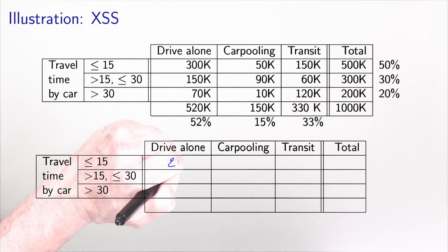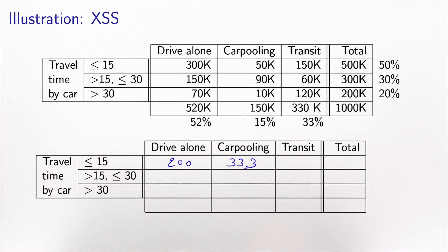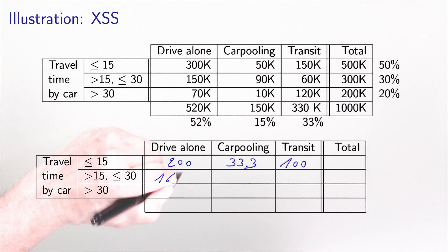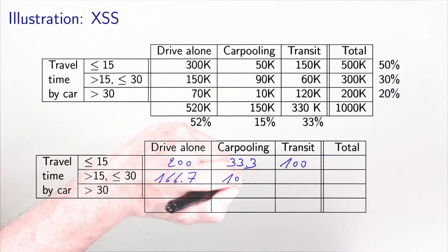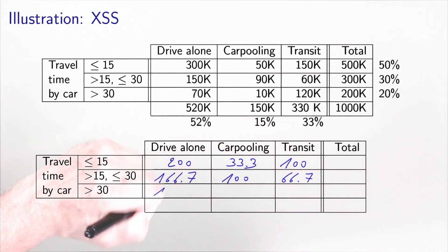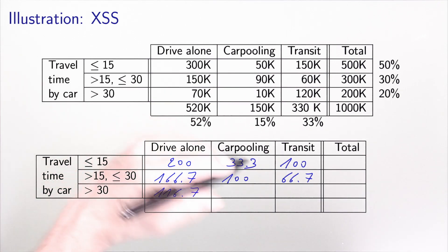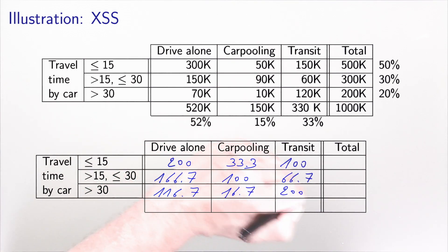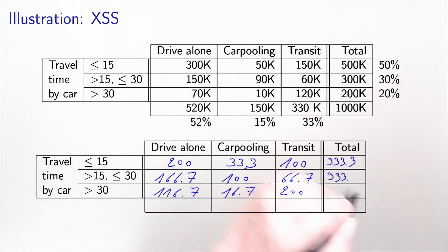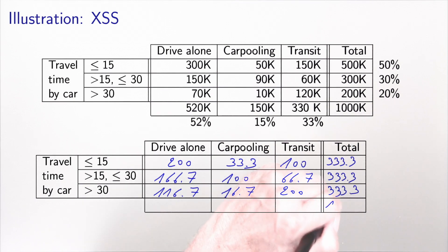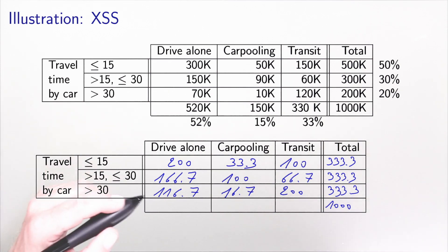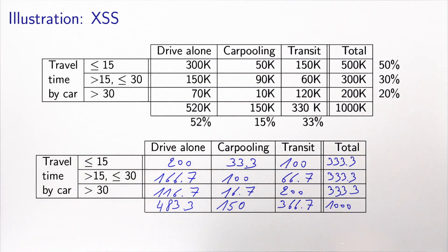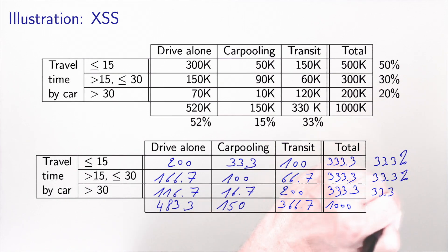Applying the sampling, we obtain the following values: 200, 33.3, 100, 166.7, 100, 116.7, 16.7, and 200. The column totals are each one-third, one-third, one-third — so this is by design. We decided that each group should be equally represented in the sample.